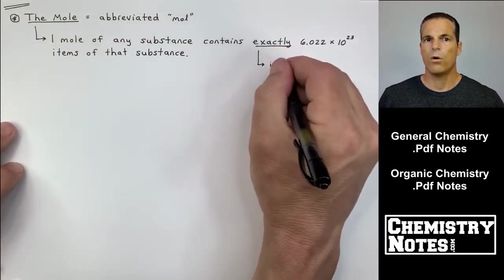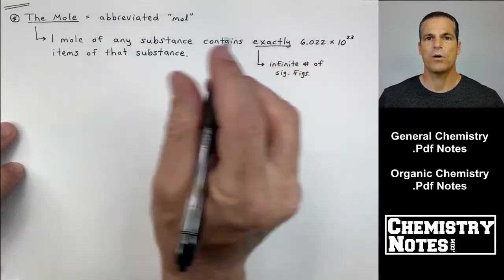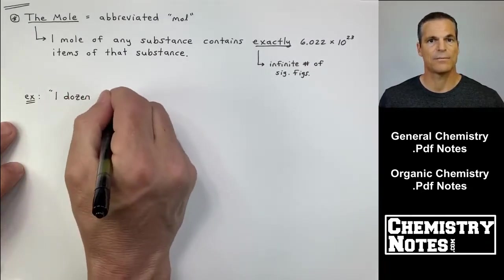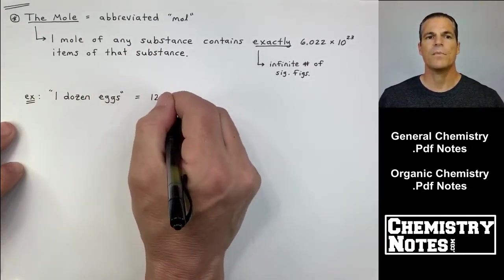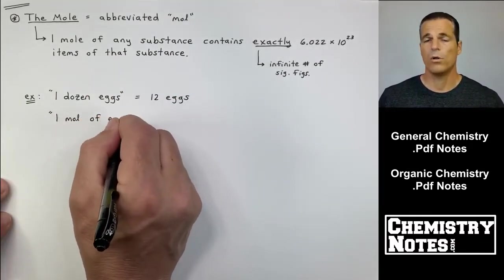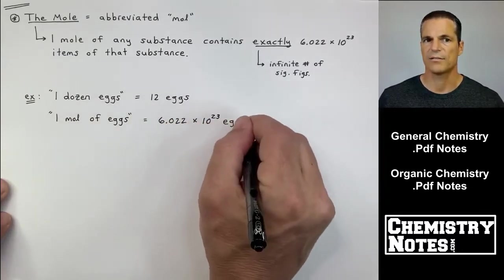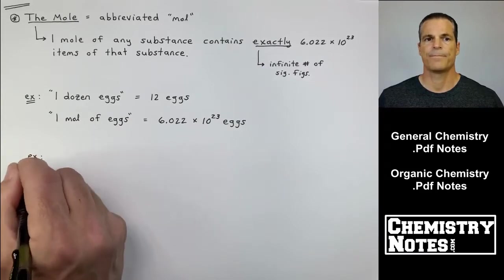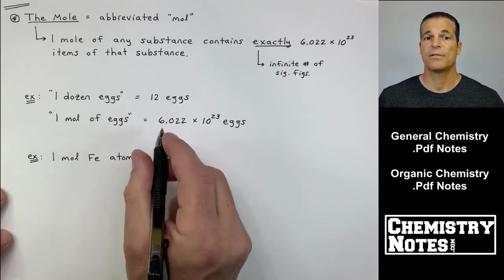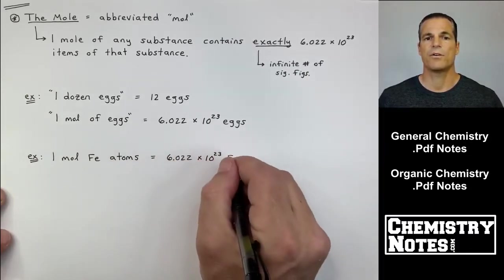And one mole of any substance contains exactly 6.022 times 10 to the 23rd items of that substance. As an example, a dozen eggs is 12 eggs. If I have one mole of eggs, I have 6.022 times 10 to the 23rd eggs. Another example. If I have one mole of iron atoms, I have 6.022 times 10 to the 23rd iron atoms.